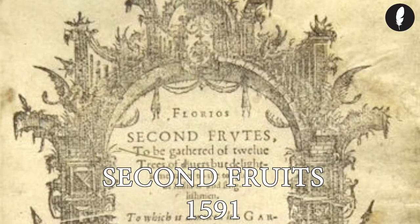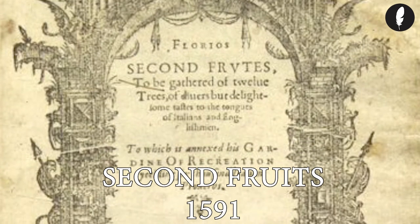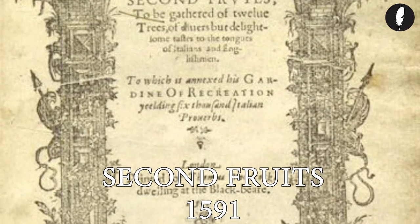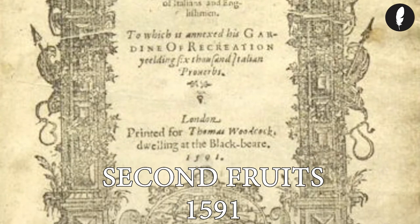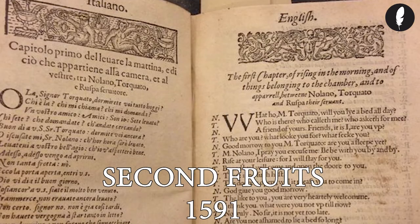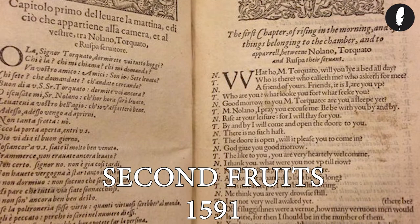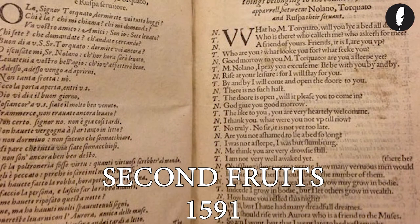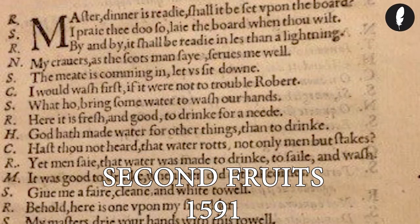It is not a coincidence that Second Fruits, Florio's second work published in 1591 — four years after he gave Decameron to John Wolfe — contains two chapters in which Florio borrowed, translated and adapted two novels from Decameron into English.